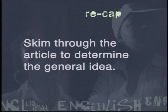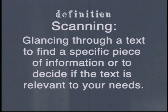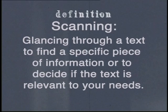What we have done here is skimmed through the article and determined the general idea. Now let's look at scanning. Scanning involves glancing through a text to find a specific piece of information or to decide if the text is relevant to your needs. We use scanning to look quickly and closely for something specific, whereas we skim to find out the general idea of an article.